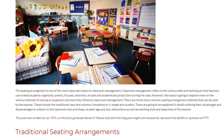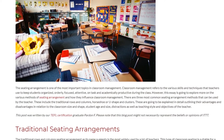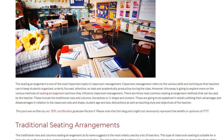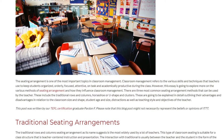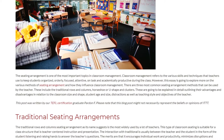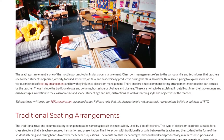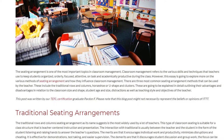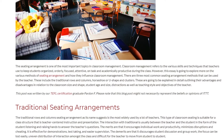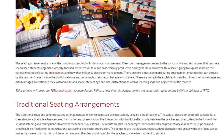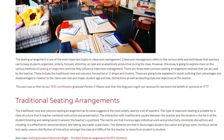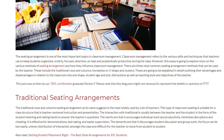There are three most common seating arrangement methods that can be used by the teacher. These include traditional rows and columns, horseshoe or U-shape, and clusters. These are going to be explained in detail, outlining their advantages and disadvantages in relation to classroom size and shape, student age and size, distractions, as well as teaching style and objectives of the teacher.